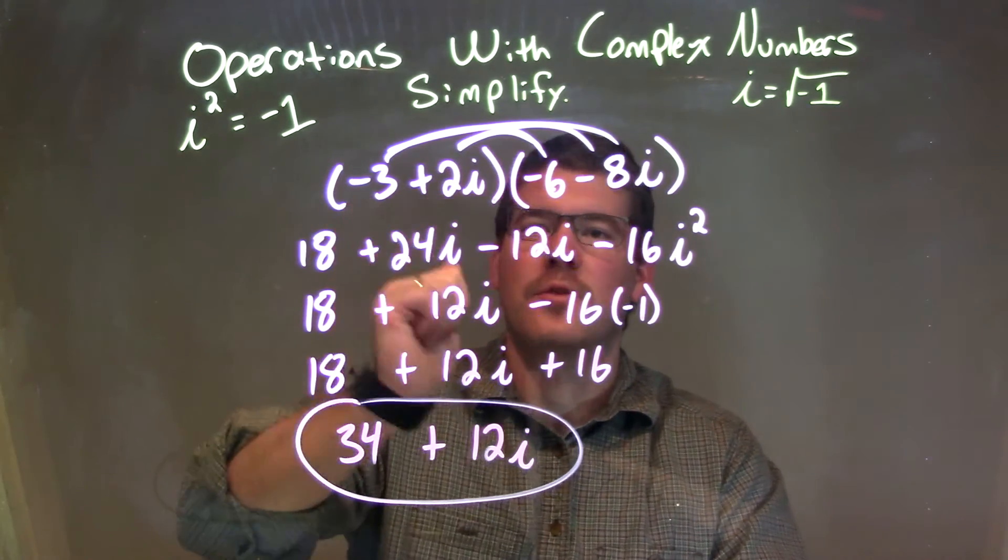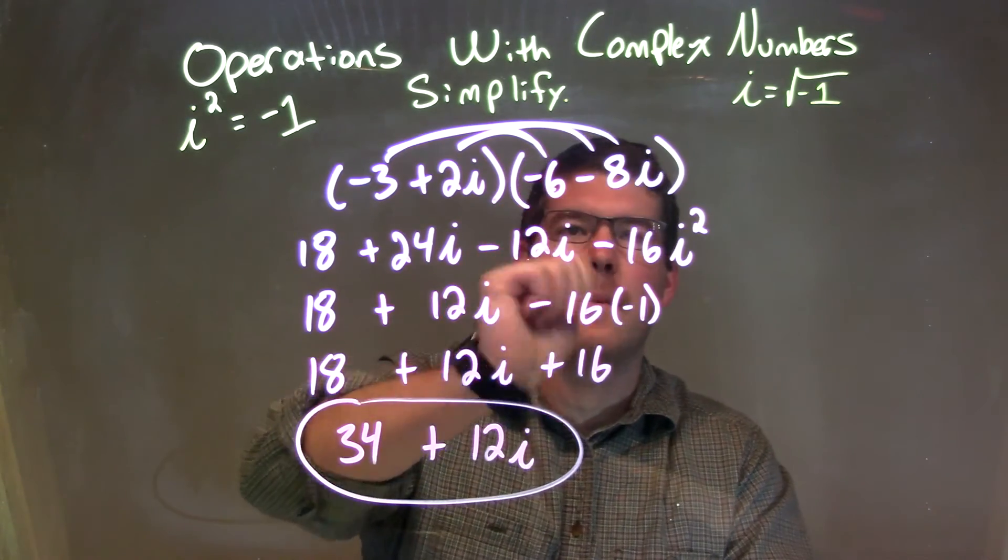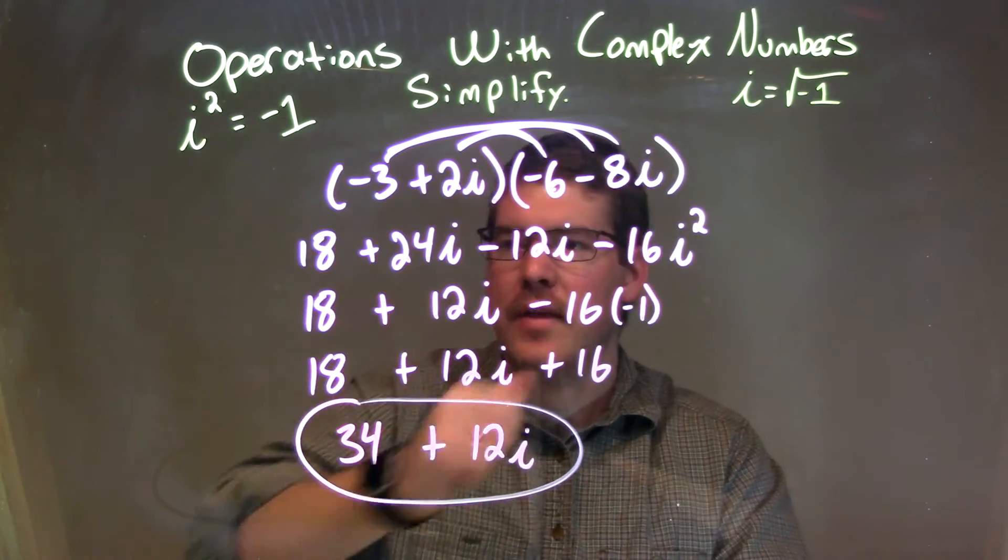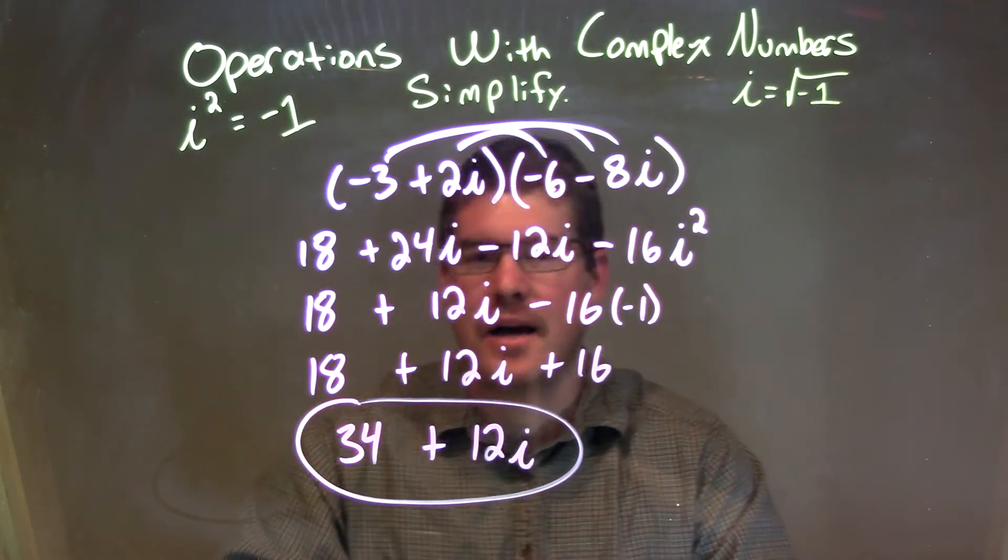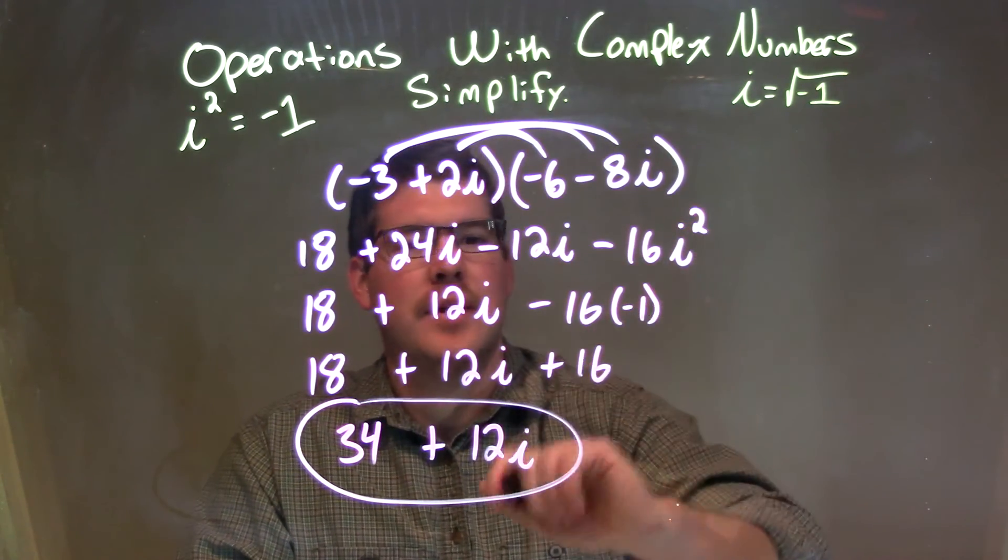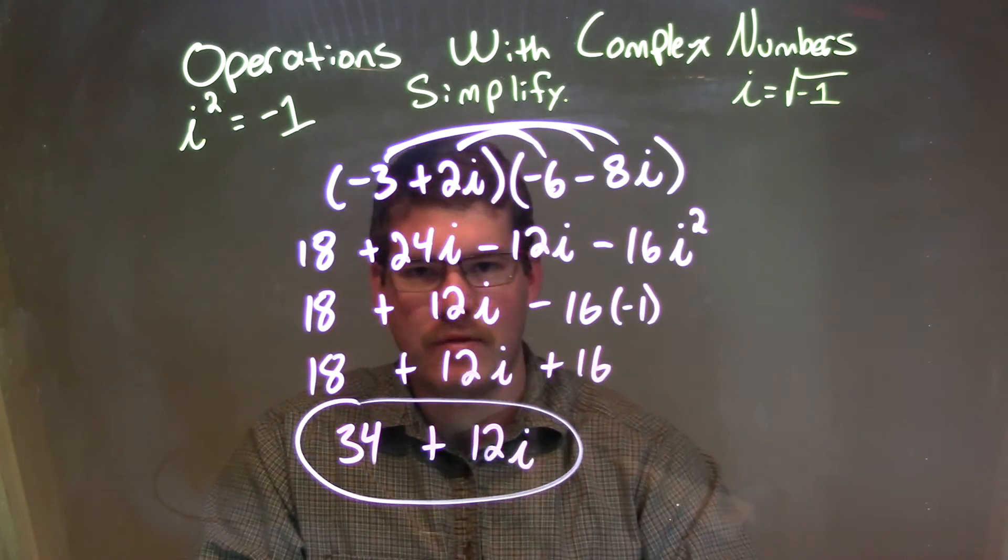So, let's recap. We're given negative 3 plus 2i, multiplied by negative 6 minus 8i. When I multiply that out, I get 18 plus 24i minus 12i minus 16i squared. i squared became a negative 1, and 24i minus 12i was 12i.